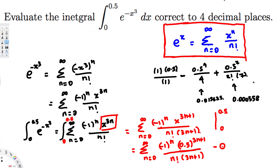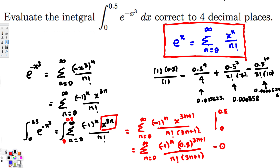For n=3: negative 1 to the power 3 is negative. We get 0.5 to the power of 3 times 3 plus 1, which is 0.5 to the power 10, over 3 factorial times 10. This calculates to negative 0.00000006276. This has four leading zeros, so this is the term we neglect. If the problem asked for five decimal places, we would look for five zeros.